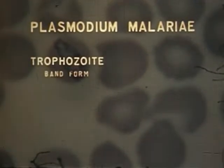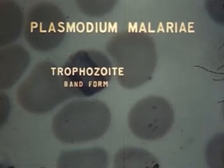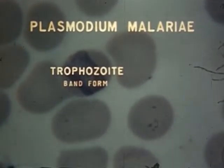The trophozoites of malariae are often found as band forms, stretched across the cell with fairly straight parallel edges. Such a band shape may be assumed by the parasite at any stage in its development.